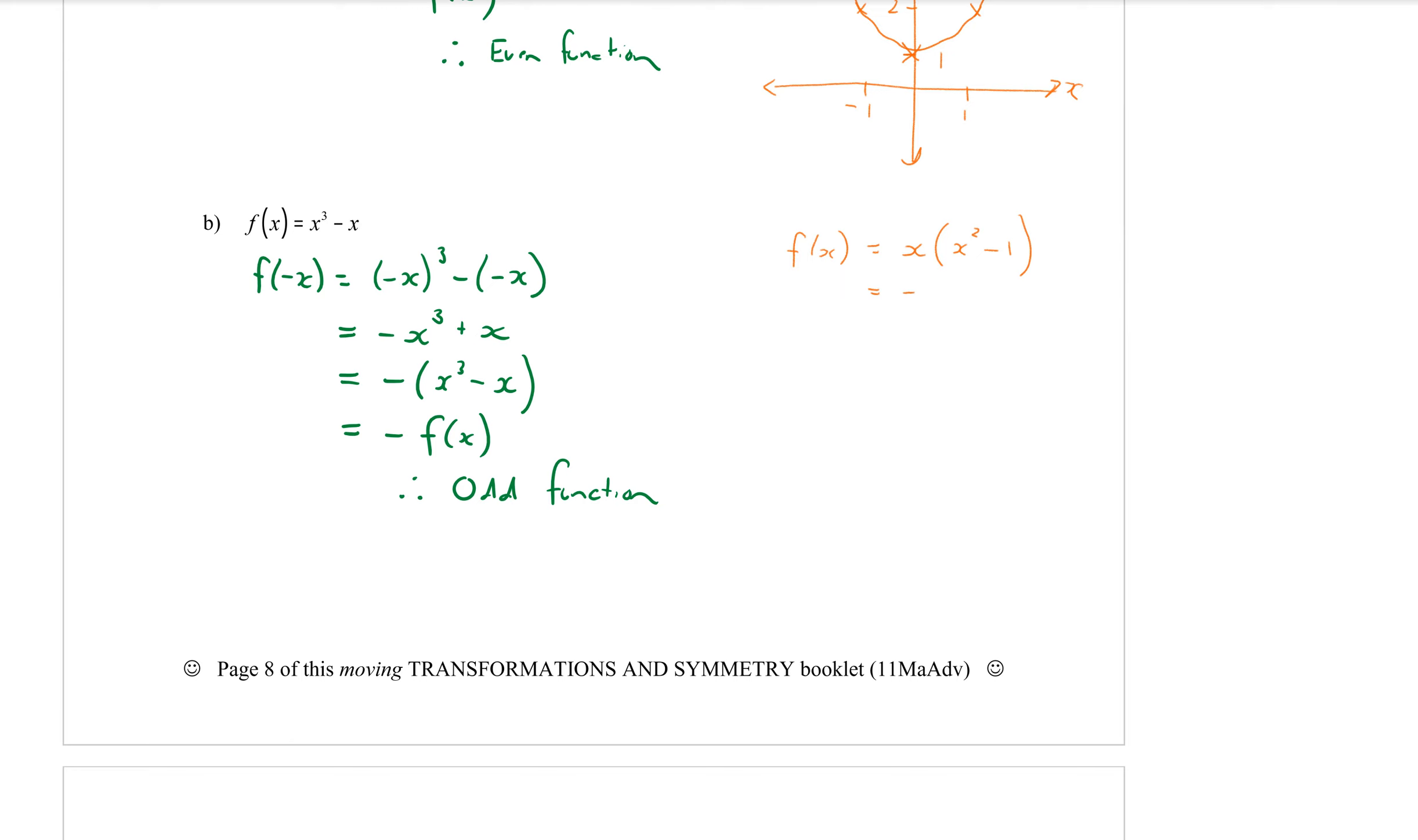Now the x squared minus one could be factorized further to be a difference of two squares. That would be double set of brackets, x at the beginning of both of them, one at the end of each of them. One's a plus and one's a minus. From that you would get the zeros. The zeros will be from the first x at the front we would get x equals zero. From the first bracket we would get negative one and from the second bracket we would get a positive one.